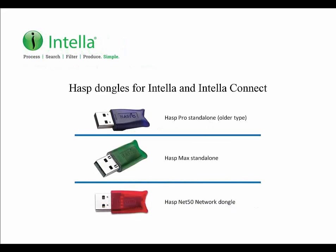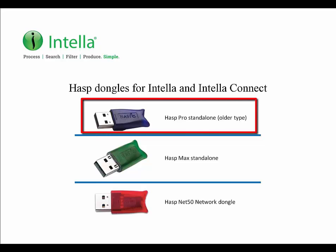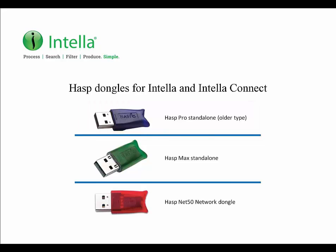There are three types of Hasp dongles that Vound supplies for licensing the Intelli and IntelliKinect products. The purple dongle is a Hasp Pro standalone dongle. This is an older type of dongle which we no longer provide. However, if you have one of these dongles, it still works fine with IntelliKinect and can be updated to work with our latest versions of software.